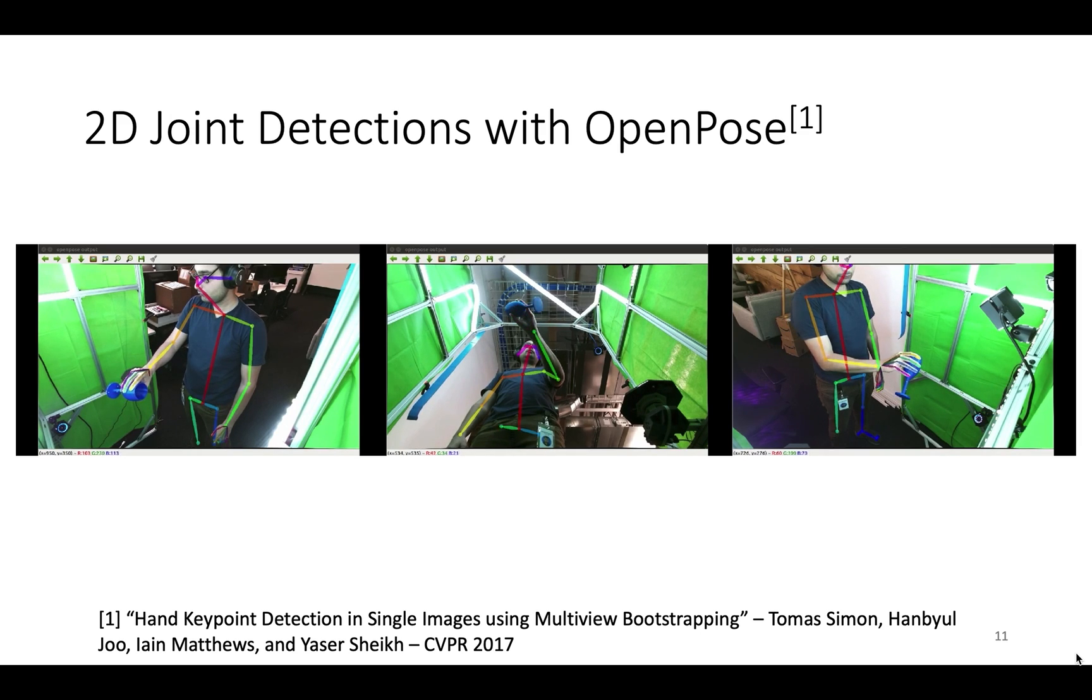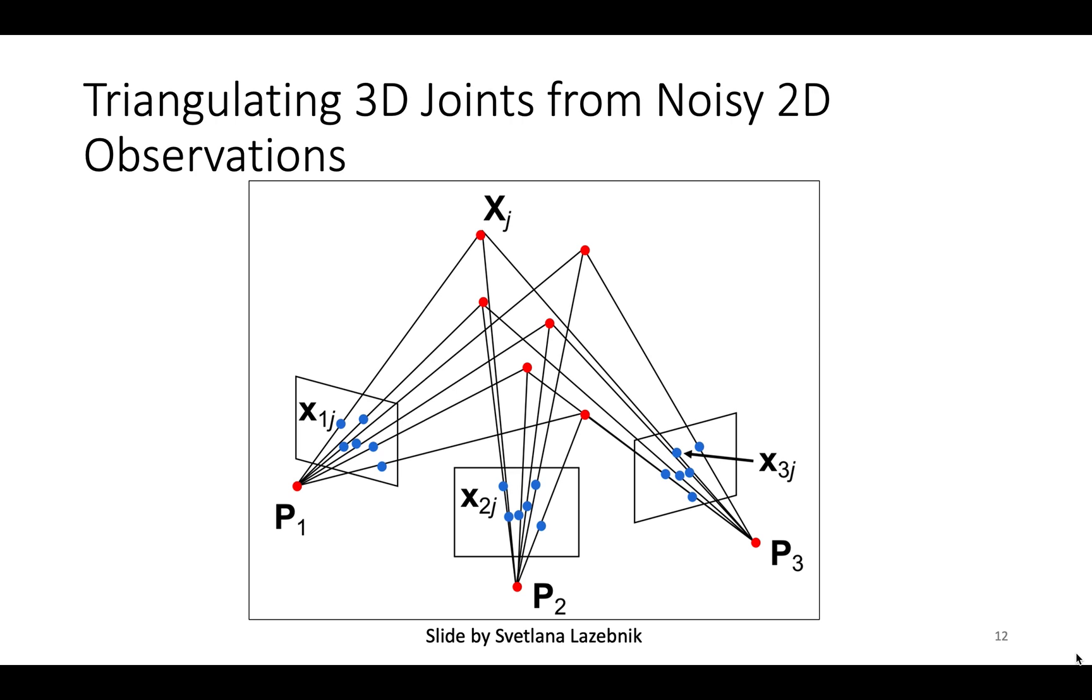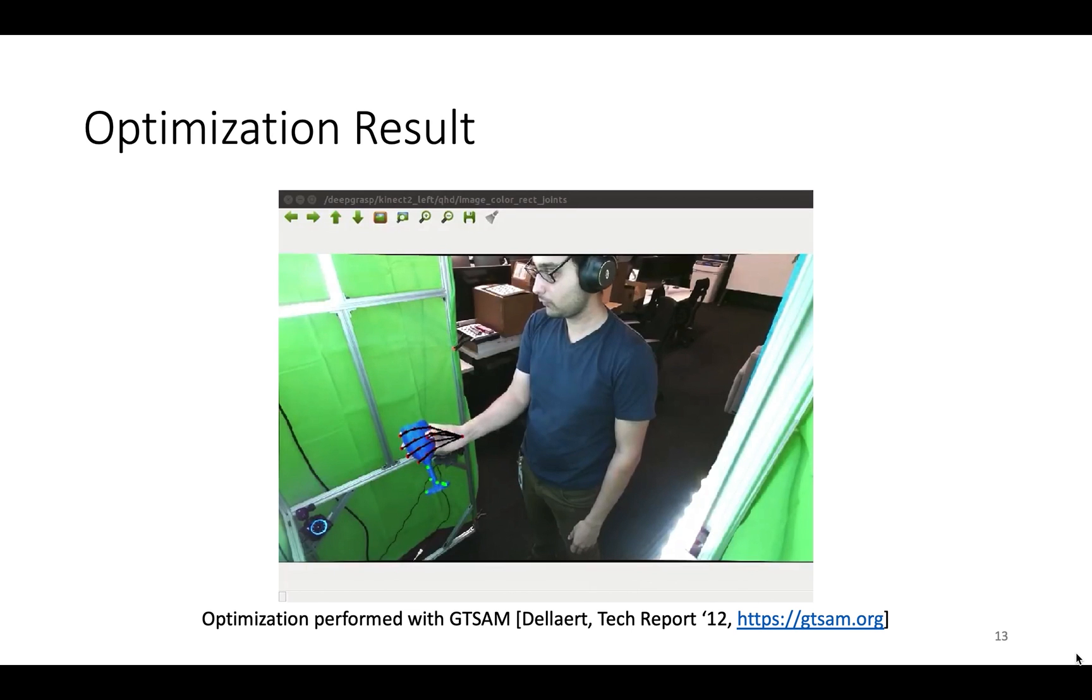Participants held the object in a static grasp and moved it randomly for 10 seconds. Object pose was tracked by OptiTrack and OpenPose was used to detect 2D joints in the Kinect images. Individual joint detections are noisy, but accurate 3D joints can be triangulated from multiple detections because the hand is stationary with respect to object. Here's the optimized results with hand and object pose projected into the image.